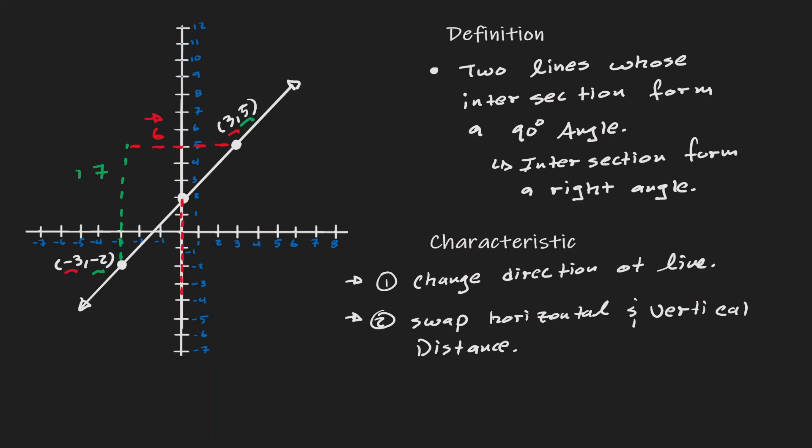And now I had a vertical distance of 7. By swapping it, now I'm going to have a horizontal distance of 7. So let's move 7 units to the right. And now I have a new point: 7 comma negative 4.